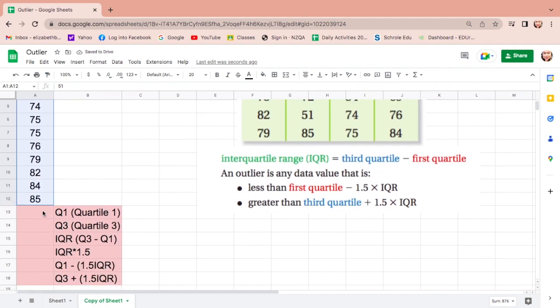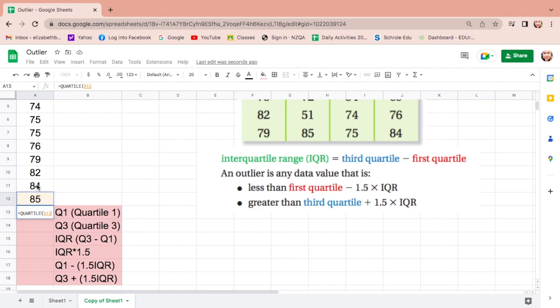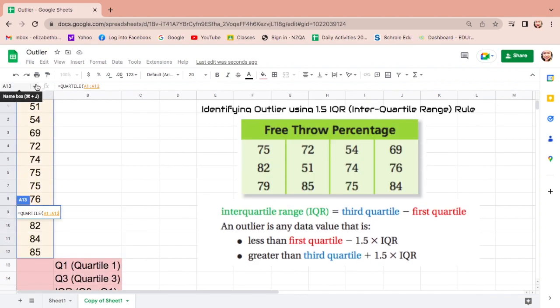Then find Q1, equals, type QUA, click quartile, highlight all the data, comma, 1 for quartile 1, enter.